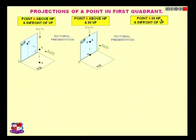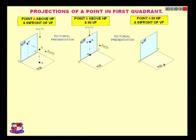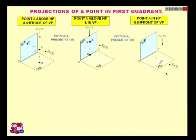What if point A is in HP and in front of VP? The point is in front of VP but lying on the horizontal plane. Point A is located on the horizontal plane over here, and it is not behind VP. For the front view and top view projections: the top view would be located on that side, and the front view would be located on the horizontal plane itself.